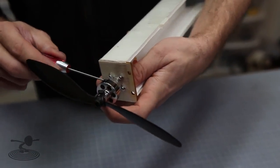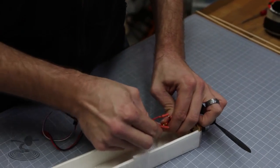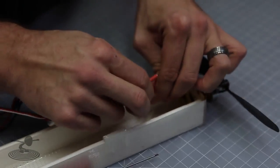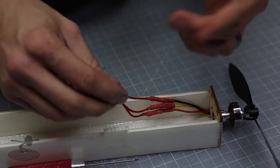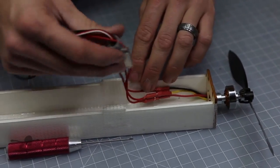Our next step is to install our speed control. We're simply going to connect our bullet connectors. When we run up our motor, if it runs backwards, all we need to do is switch any two of the bullet connectors to make it run the opposite direction.